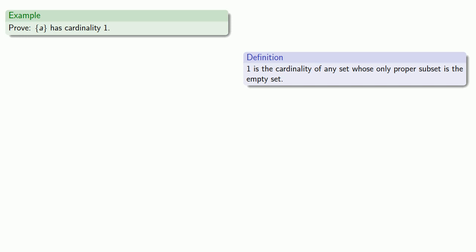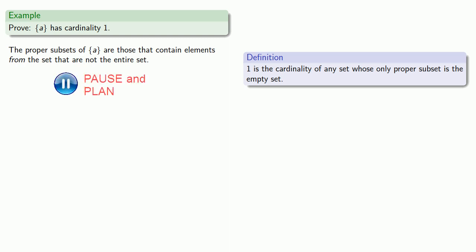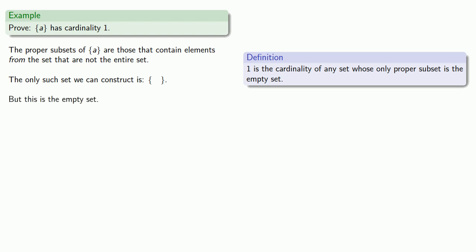So earlier we identified that this set has cardinality one. Let's actually prove it using our new definitions. One is the cardinality of any set whose only proper subset is the empty set. The proper subsets of this set are those that contain elements from the set but are not the entire set. The only such set we can produce is the empty set. And so the only proper subset of this set is the empty set, and therefore this set has cardinality one.